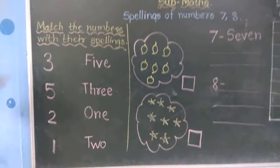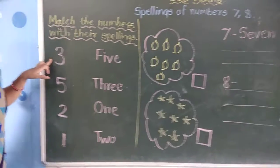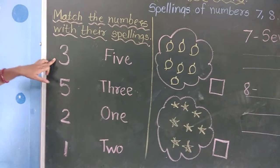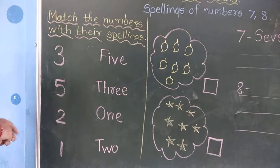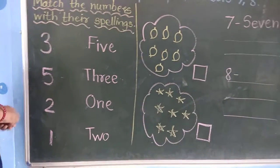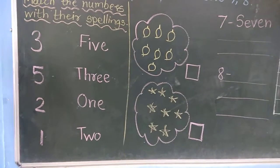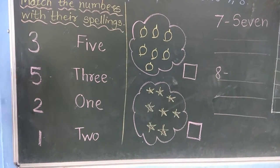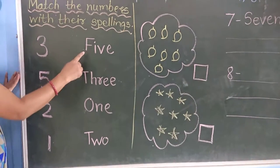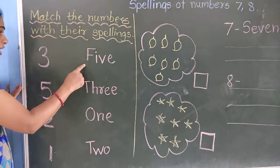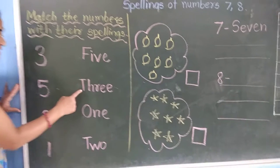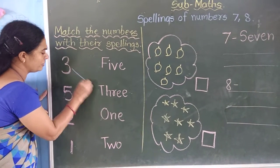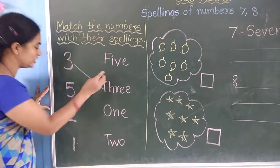Okay, see here — which number is first here? Yes, 3. What is the spelling of number 3? The spelling is T-H-R-E-E. Is this the spelling of number 3? No. Is this? Yes. So we will match the name.